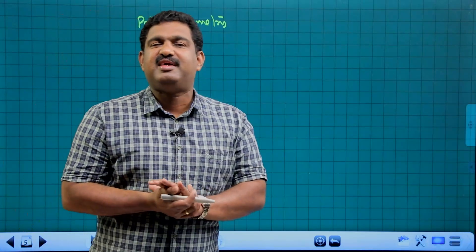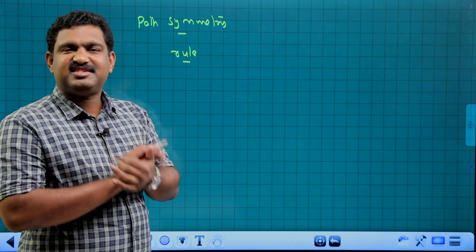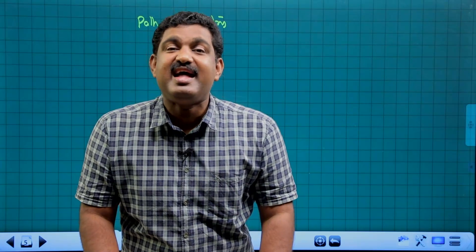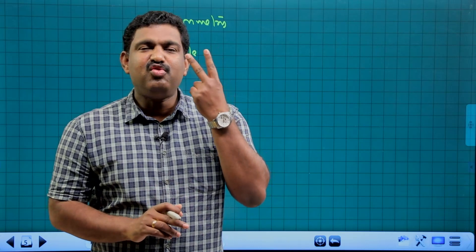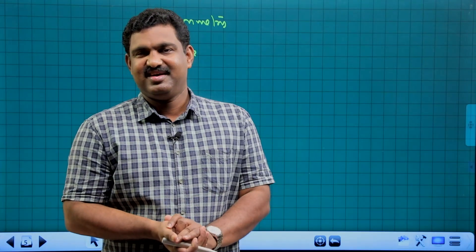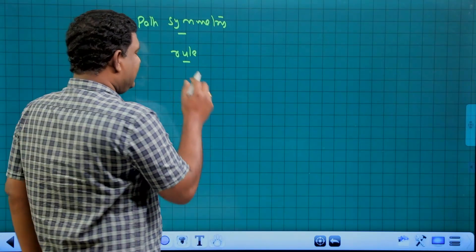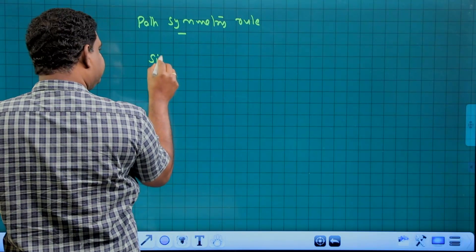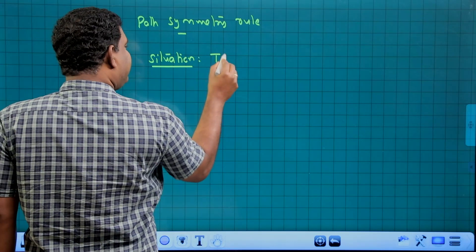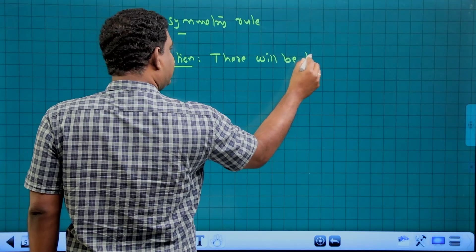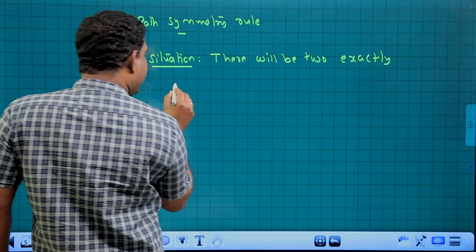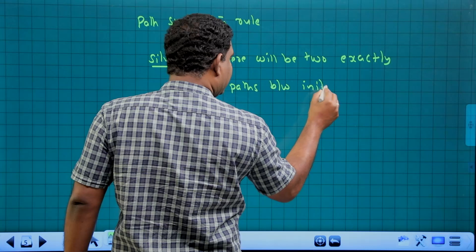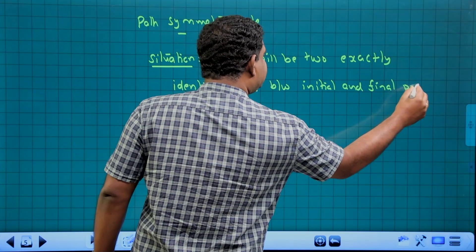This is the path symmetry rule situation. Between the initial point and the final point of the circuit, there will be two exactly identical paths. This rule applies when there are exactly identical paths between the initial and final points.